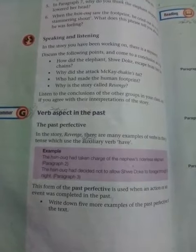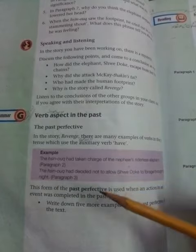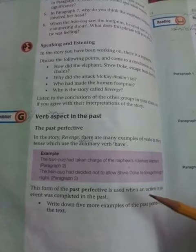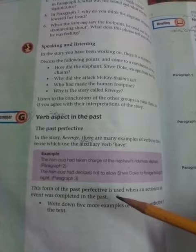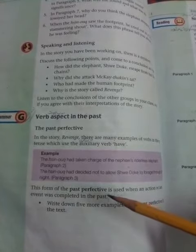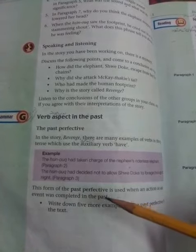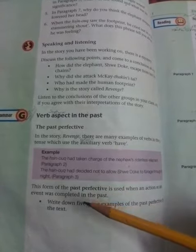The past perfective — first of all, we have here the past perfective. I will tell you the first definition: this form of past perfective is used when an action or an event was completed in the past. Past perfective form is also used when any event or action has been completed in the past tense.